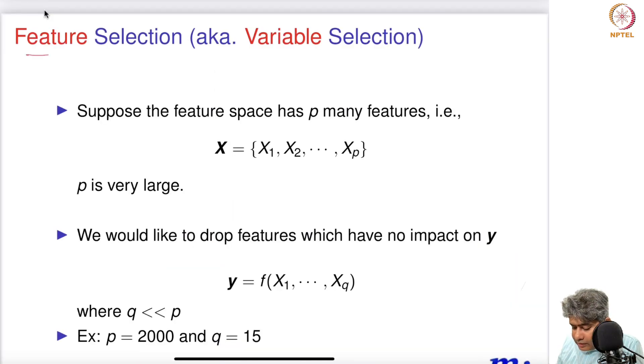Welcome back to part B of lecture 6. In this part, we are going to talk about feature selection, also known as variable selection. Feature selection is typically a term more popular in the machine learning community, and variable selection is more popular in the statistics community. But most of them are essentially the same thing.